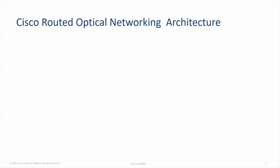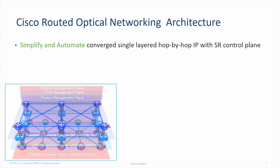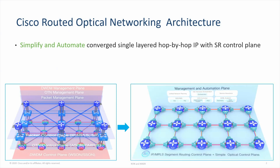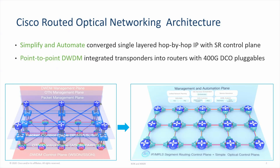The Cisco Routed Optical Networking Architecture is about simplification and automation. It converges multiple planes of optical TDM and packet layer into a single hop-by-hop IP layer with segment routing control plane. On the optical side, it uses simple point-to-point DWDM, and the transponders are integrated into the routers with 400GB DCO pluggable optics.